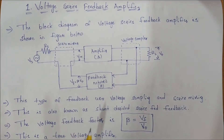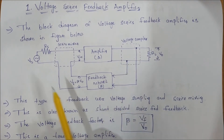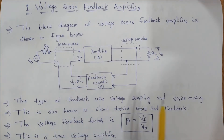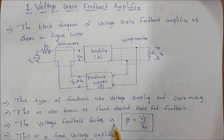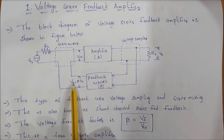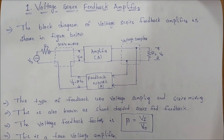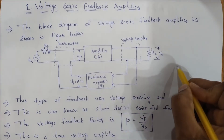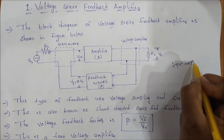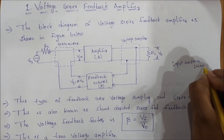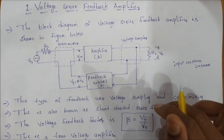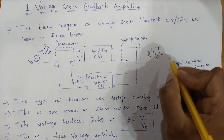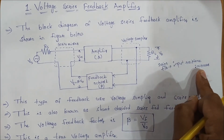This type of feedback is shunt-derived series-fed feedback. The feedback function is shunt on the output and series connected on the input. The voltage feedback factor beta equals vf over v0. This is the series feedback connection. For series feedback connection, the input resistance increases, while for shunt feedback connection, the input resistance decreases.